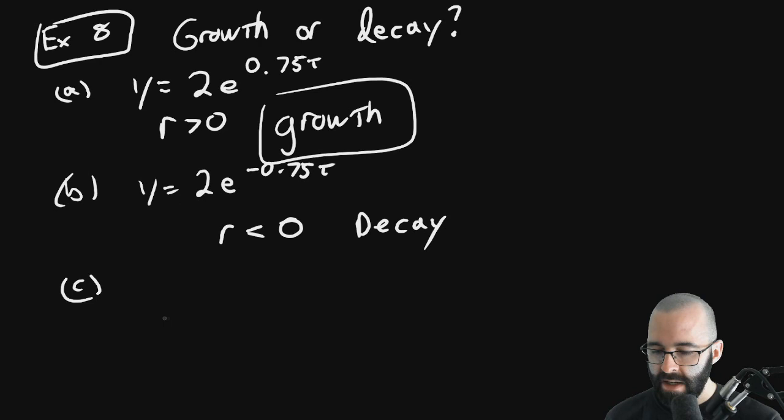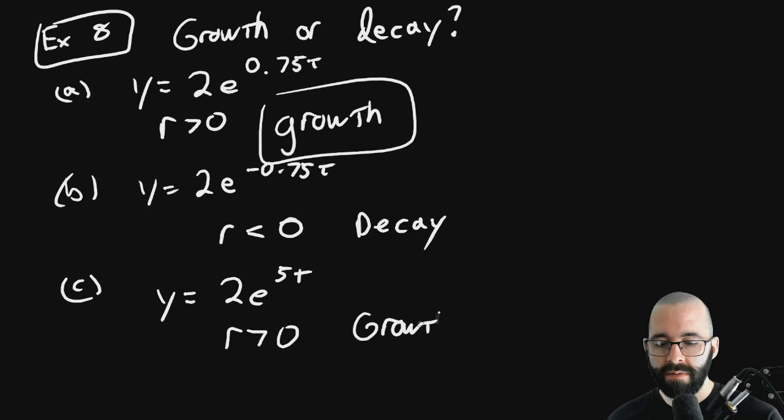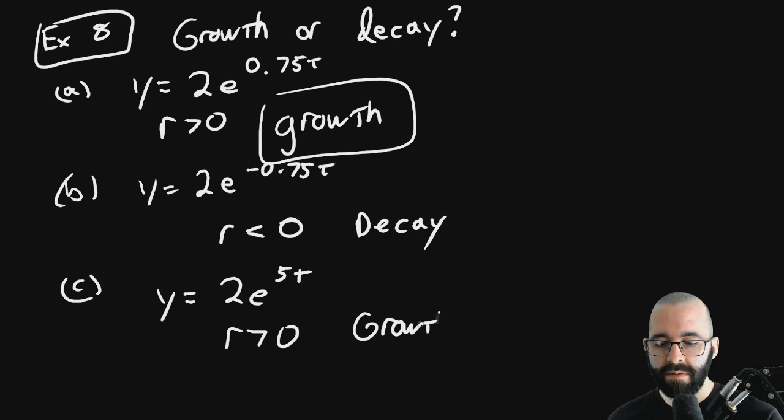Last one is Y = 2e^(5t). R is very positive. It's positive 5. So it's growth. That's how you do these problems. Good luck. Enjoy. Have fun. Laugh a little bit when you're doing math. Oh, this problem is a decay problem. Bye-bye.